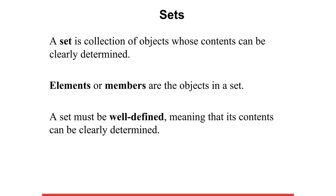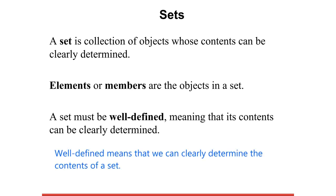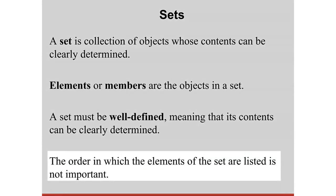In this text, we will only consider collections that form well-defined sets. Well-defined means we can clearly determine the contents of the set — we can clearly tell whether a particular object belongs to a set or not. Also, the order in which the elements of the set are listed is not important. Meaning if I list A first followed by B, that is the same as listing B first and then A.